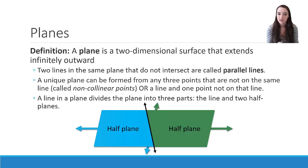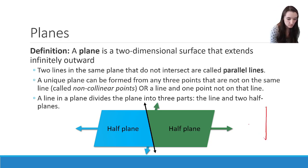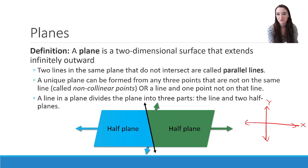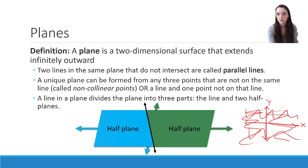A line in a plane divides the plane into three parts: the line itself and two half planes. Think of the XY plane from algebra — the Y axis splits the XY plane into two halves, and the X axis does as well, because they are lines within the plane.